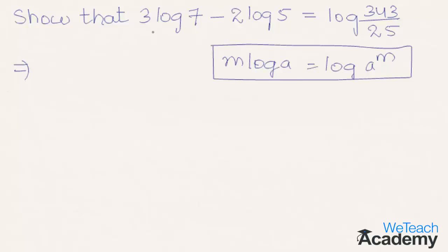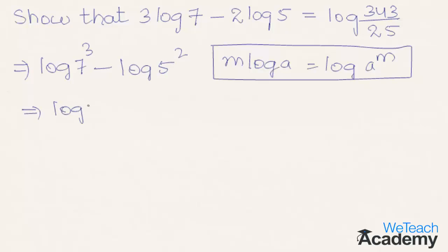we can write 3 log 7 as log 7 raised to the power 3, minus log 5 raised to the power 2. That implies we get log 7 cubed, which is 343, minus log 5 squared, which is equal to log 25. So we get log 343 minus log 25.